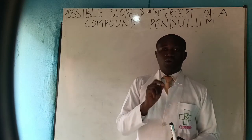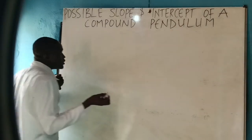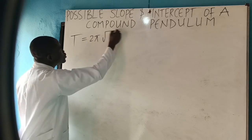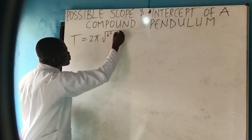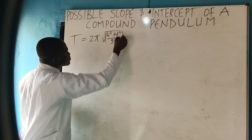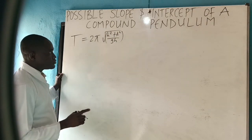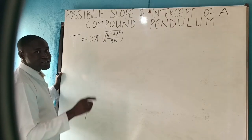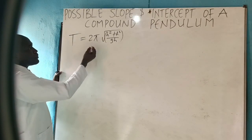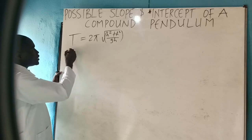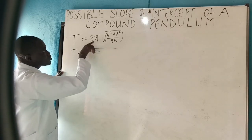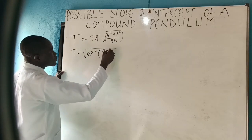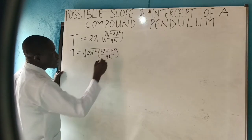First of all we want to recall the formula for a compound pendulum. The formula is: period T equals two pi times the square root of (h squared plus k squared) all over gh, where k is the radius of gyration and h is the distance from the center of mass to the axis of rotation. From mathematics this means T squared equals four pi squared times (h squared plus k squared) all over gh.